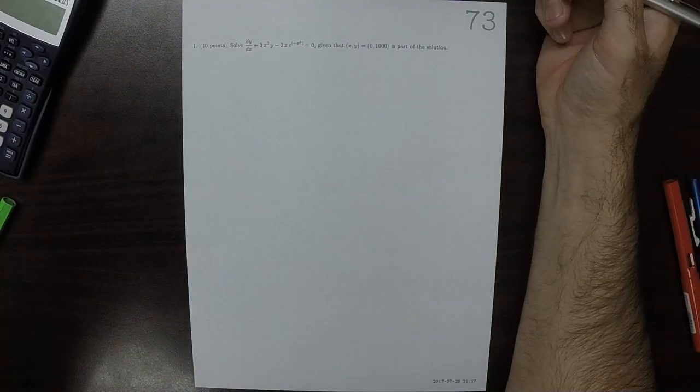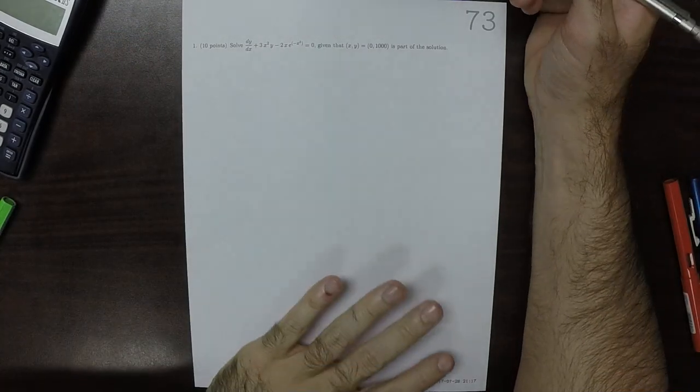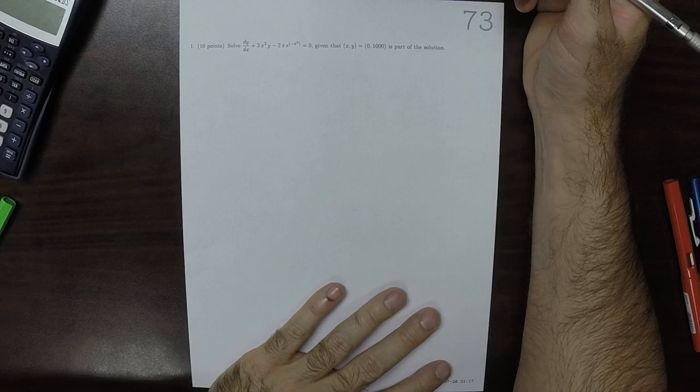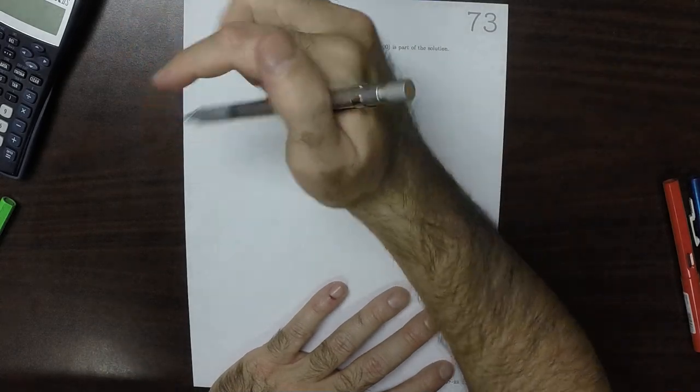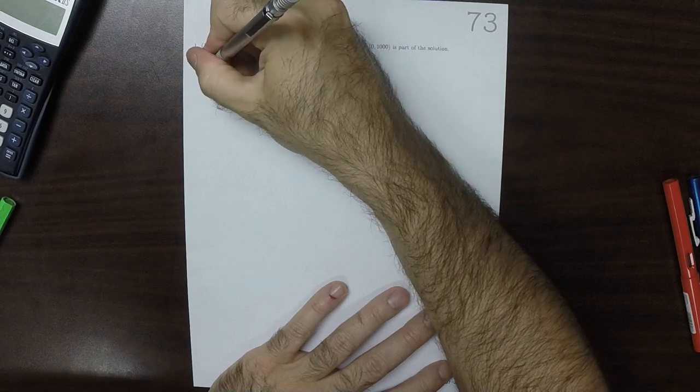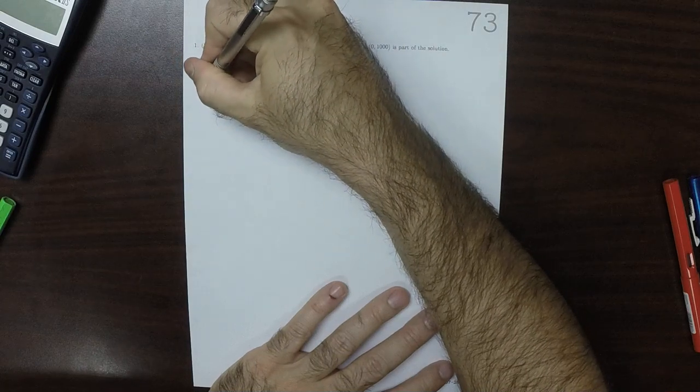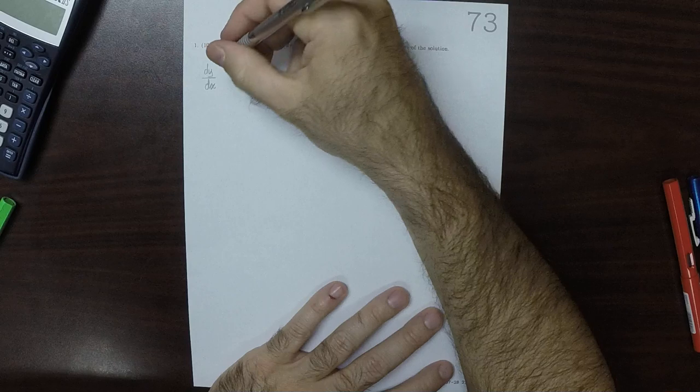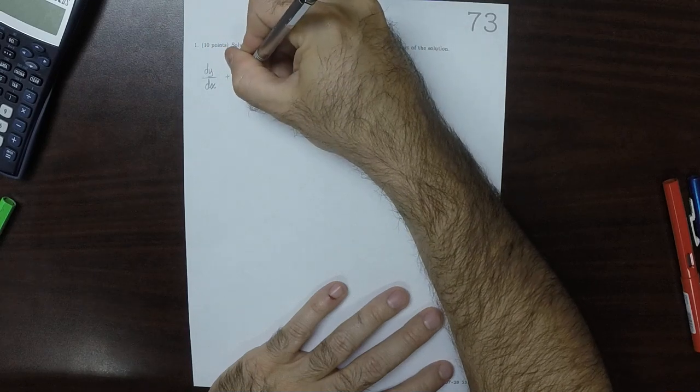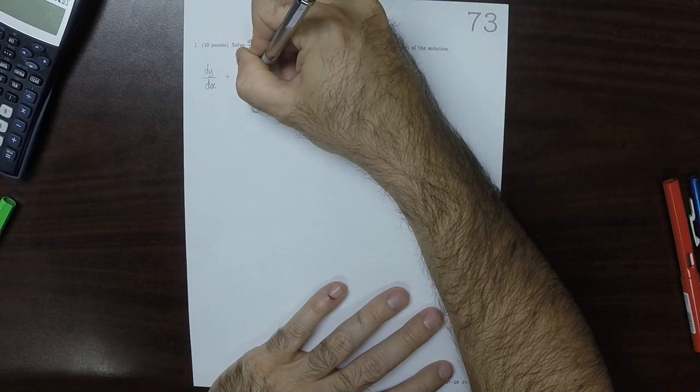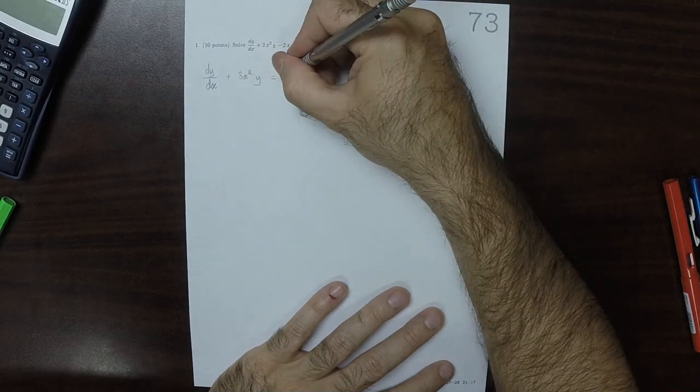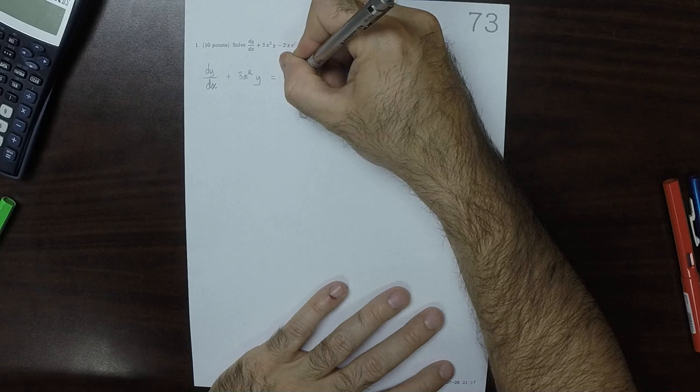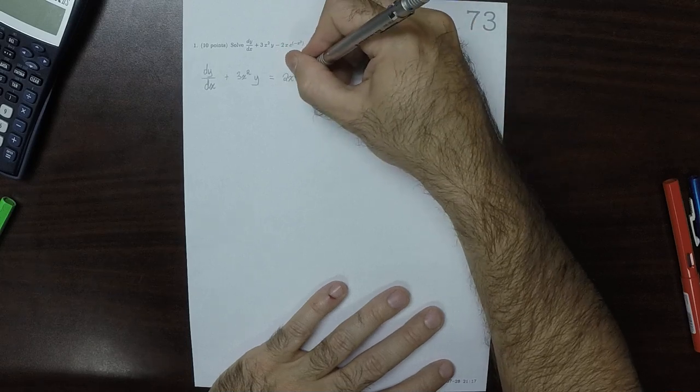This is the solution to written homework 73. This is a candidate for an integrating factor, so rewriting it in standard form: dy/dx plus 3x squared times y is equal to 2x exponential of negative x cubed.